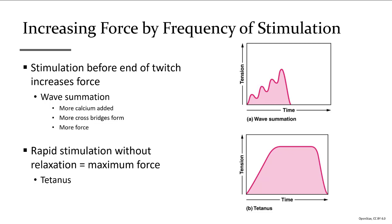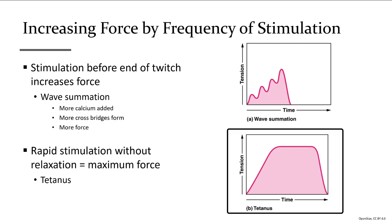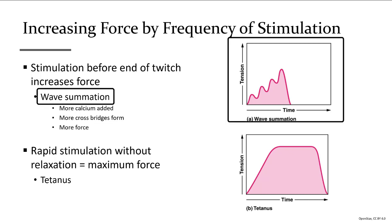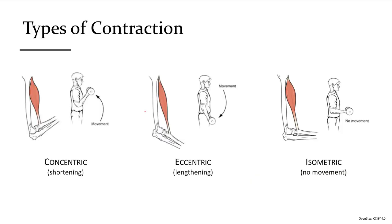This makes more cross-bridges. When you maximally stimulate a muscle cell so that no relaxation takes place, eventually all the calcium from the sarcoplasmic reticulum is dumped into the cell and you will have maximal force production — this is known as tetanus. The phenomenon of building one twitch on the next is known as wave summation.